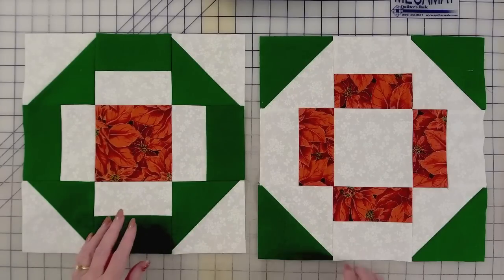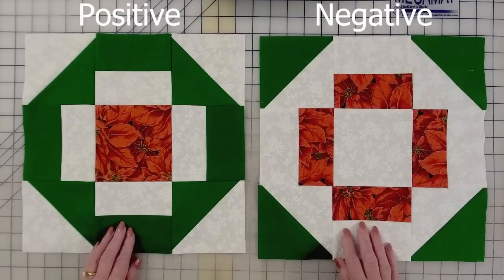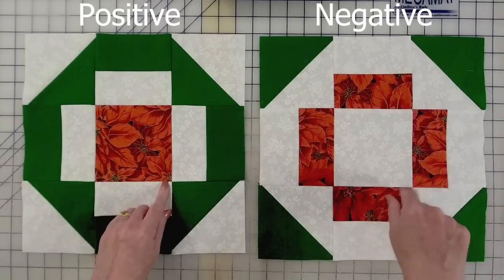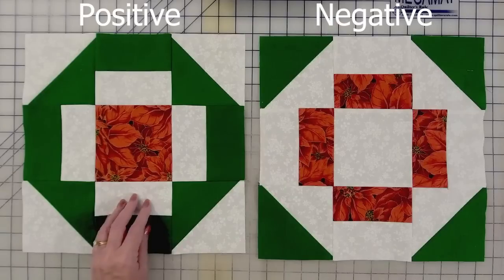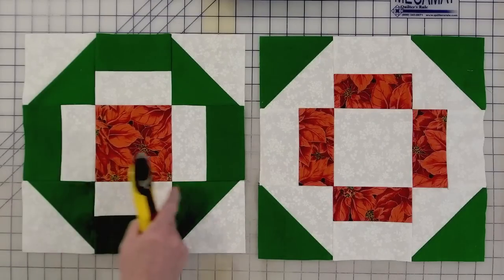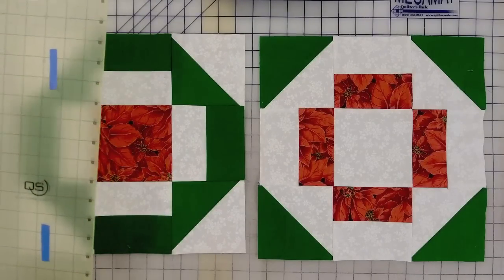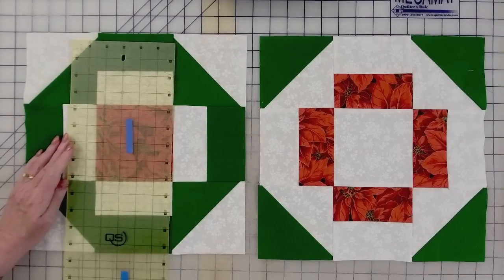So here are the positive and negative Grecian squares right next to each other. Here's the positive, here's the negative. Now to disappear these blocks, we're going to cut each of these into four equal pieces. And to do that, the calculation is simple.